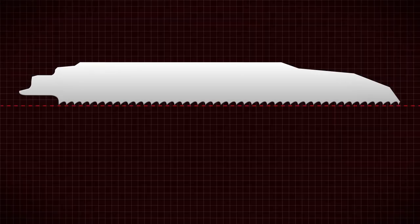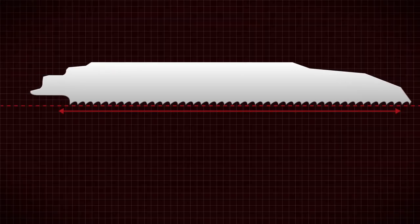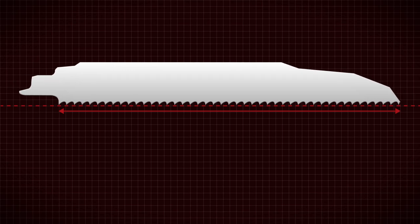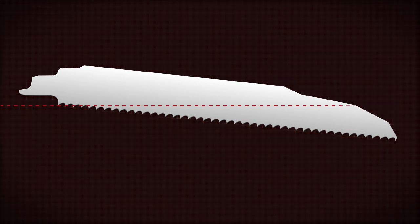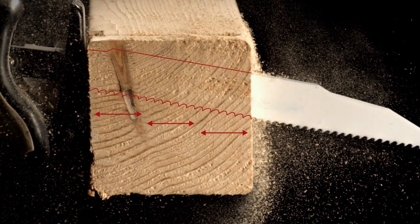If a blade has zero angle of attack, the teeth would follow one another in a single path. To maximize cutting efficiency, Lenox T2 reciprocating blades have an aggressive angle of attack, with each tooth moving along a staggered path, removing new material with every stroke.